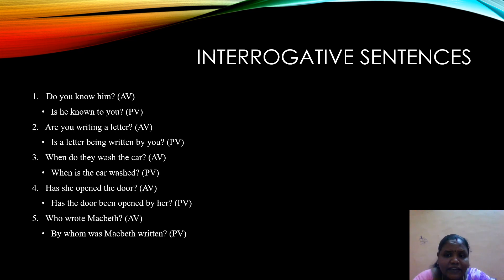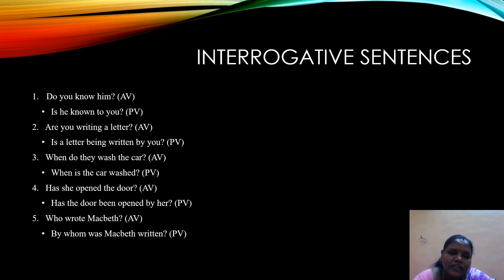Next are interrogative sentences. We have two types: yes/no type and WH type questions. While changing yes/no type questions, we should identify the tense. For example, 'Do you know him?' — 'do' tells us it is present tense, so we use am/is/are. 'Him' becomes the subject 'he,' and the third form 'known' is used: 'Is he known to you?' 'Are you writing a letter?' becomes 'Is a letter being written by you?' — 'is' is used because 'a letter' is singular, and 'being' is used because it is continuous tense.